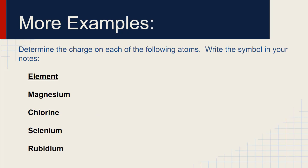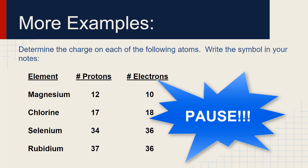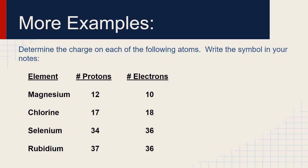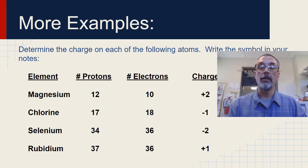Now find the charge. Charge is protons minus electrons. Write this down and figure out the charge of each of these ions. Magnesium with 12 protons and 10 electrons has a charge of plus 2. Chlorine with 17 protons and 18 electrons has a charge of minus 1. Selenium with 34 protons and 36 electrons has a minus 2 charge. Rubidium with 37 protons and 36 electrons has a charge of plus 1. Note: if it's a positive number, we write a plus sign; if it's negative, we write a negative sign.